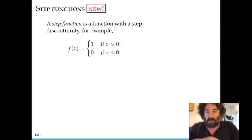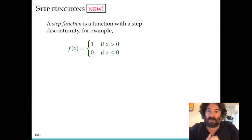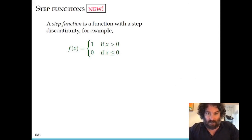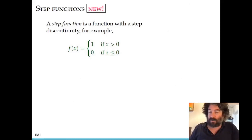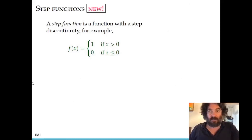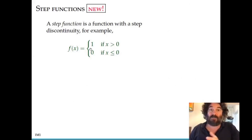The motivation for introducing Macaulay brackets is that in some cases we want to consider functions that are discontinuous, or maybe their derivatives are discontinuous. The simplest example of a discontinuous function is what's shown here — the function that just jumps up from 0 to 1 when X crosses 0. This function is equal to 0 for X less than or equal to 0, and equal to 1 for X greater than 0.